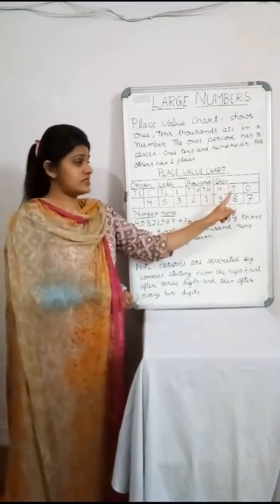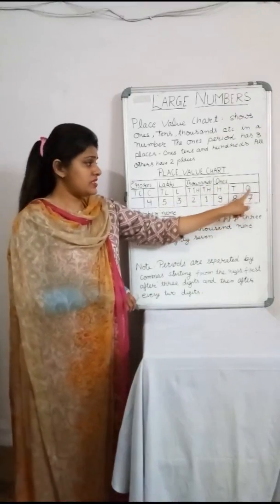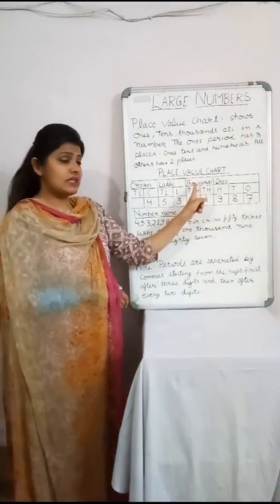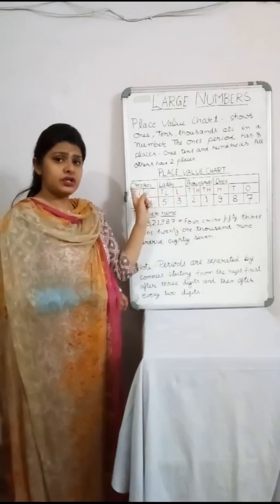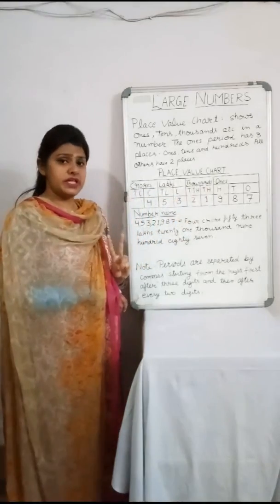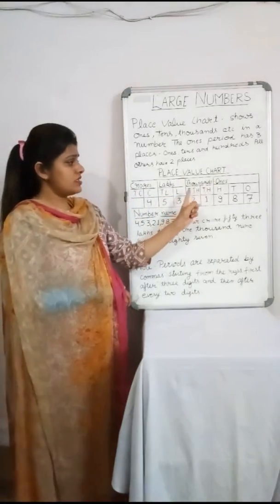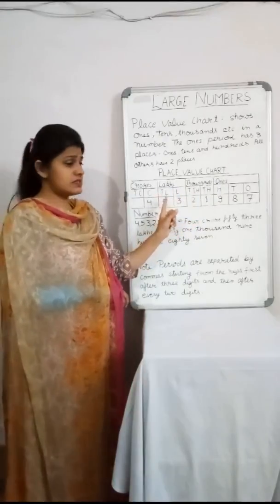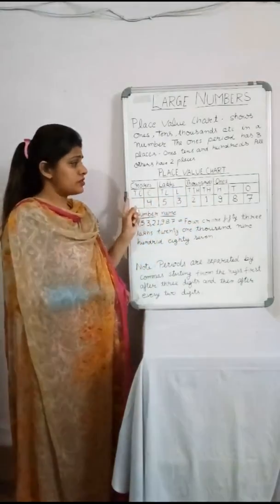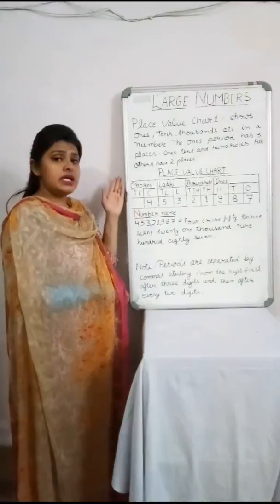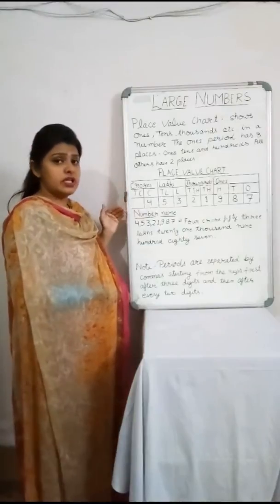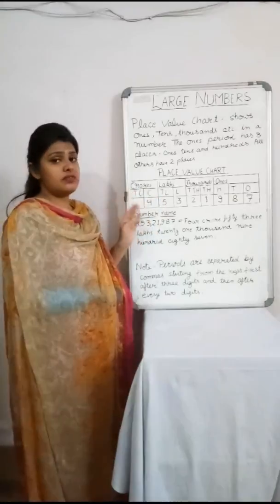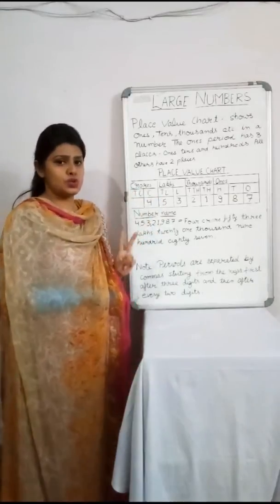The ones field has three places: ones, tens, hundreds. Whereas thousands, lakhs, and crores have two places each — thousands and ten thousands; lakh and ten lakhs; crore and ten crores. It is visible from here that ones has three places while the others have only two places.